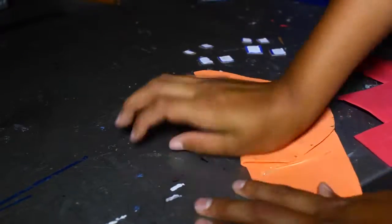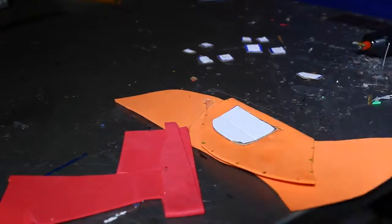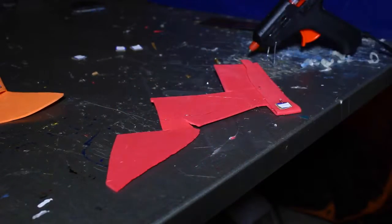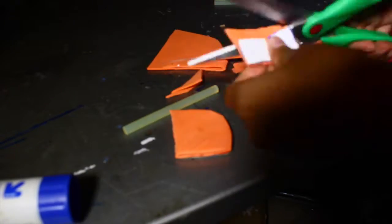Now you want to make your EVA foam double-sided by hot gluing it in half, and then you want to hot glue your cardboard pieces onto it. Now you want to cut out your hand armor pieces out of your EVA foam.